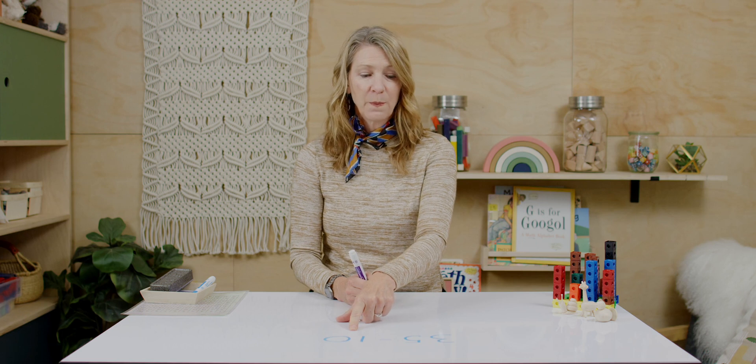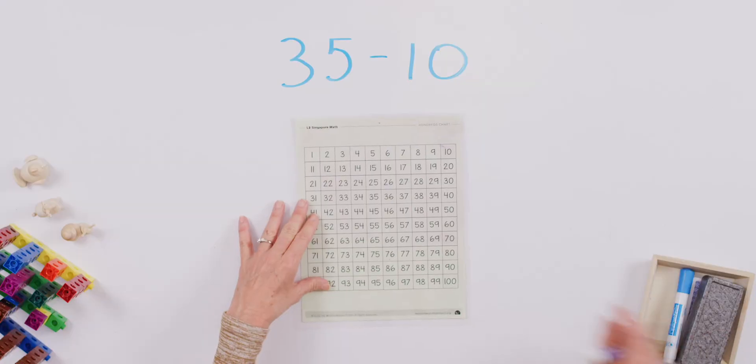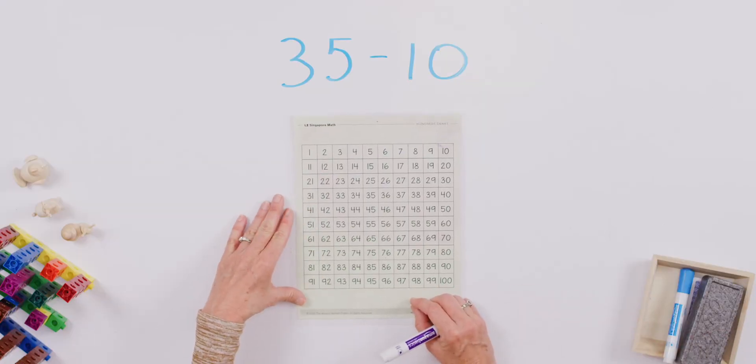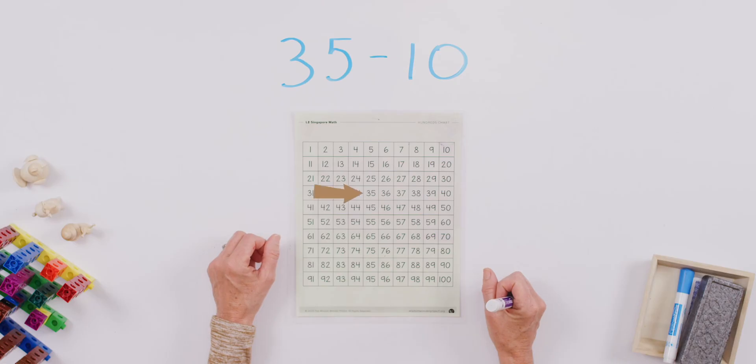Today we are going to talk about subtracting numbers close to 10. So I'm starting off with an equation that really has a 10 in it. If you have an equation like 35 minus 10, how do you think about it when you go to solve it? Probably most of you can solve it in your head. Do you think of just 10 less than 35 gives you 25? We can look at that even on our hundreds chart. Let's find 35. Do you see it? Nice. So in order to subtract 10 using the chart, we just go up to the next row. There we go. 35 minus 10 equals 25.